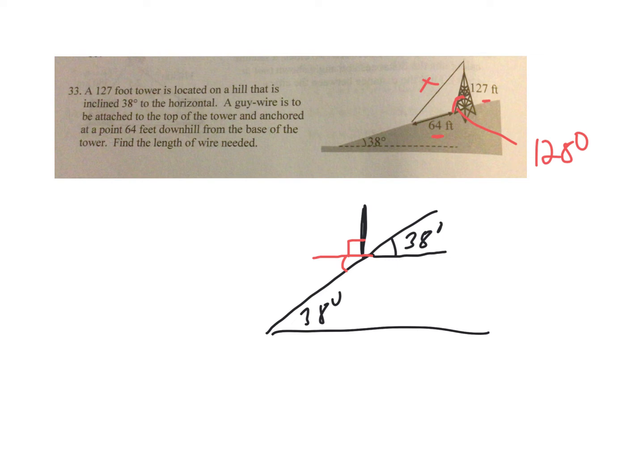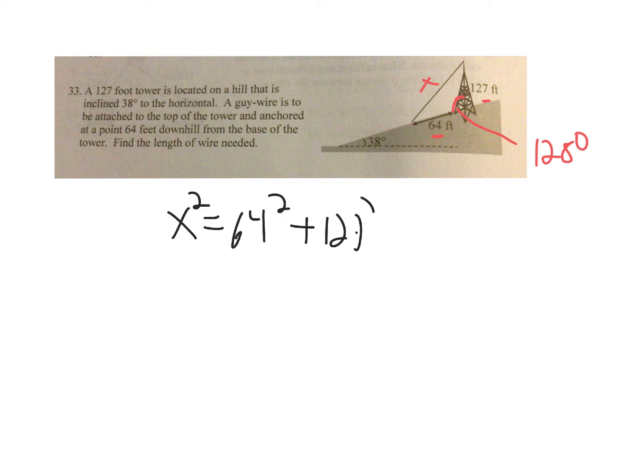Once I've got that set up, let me do some clearing. I've got to do my law of cosines. I'm going to say x squared equals 64 squared plus 127 squared minus 2 times 64 times 127 times the cosine of that included angle of 128 degrees.